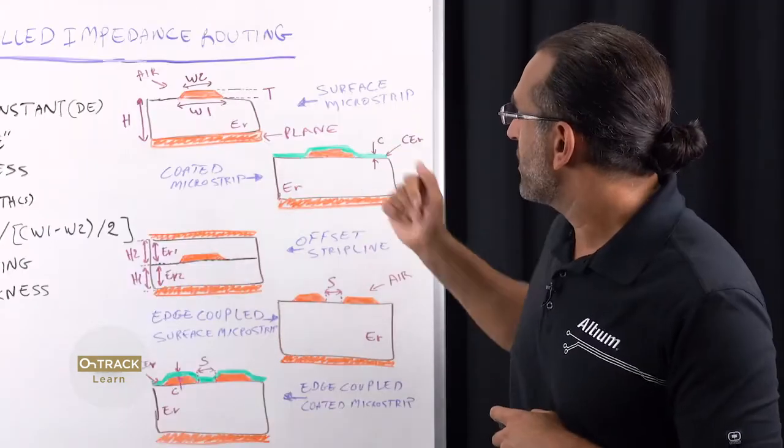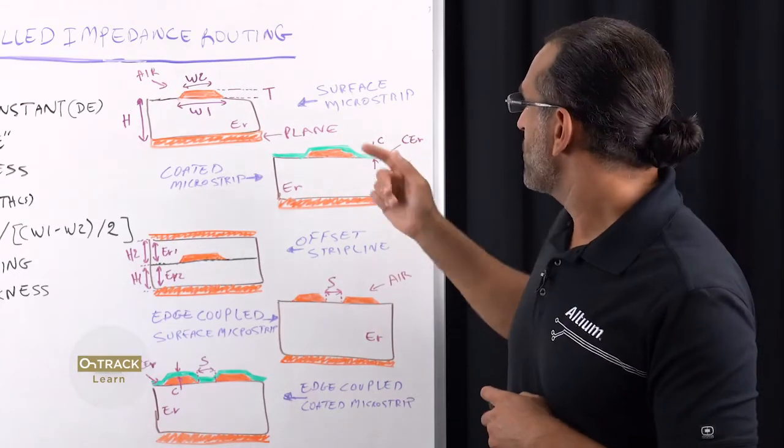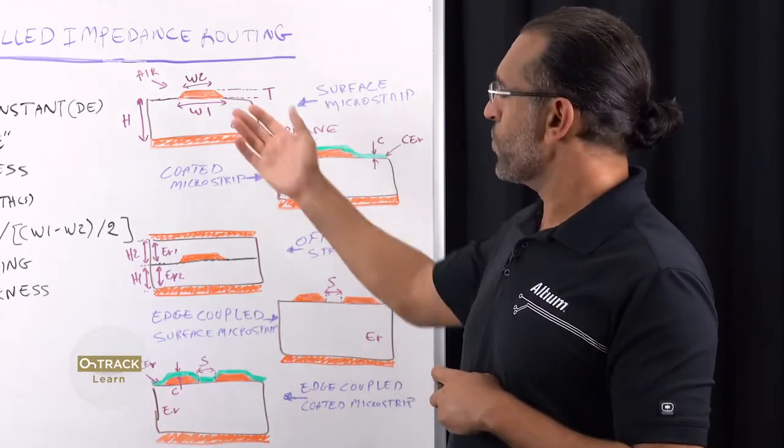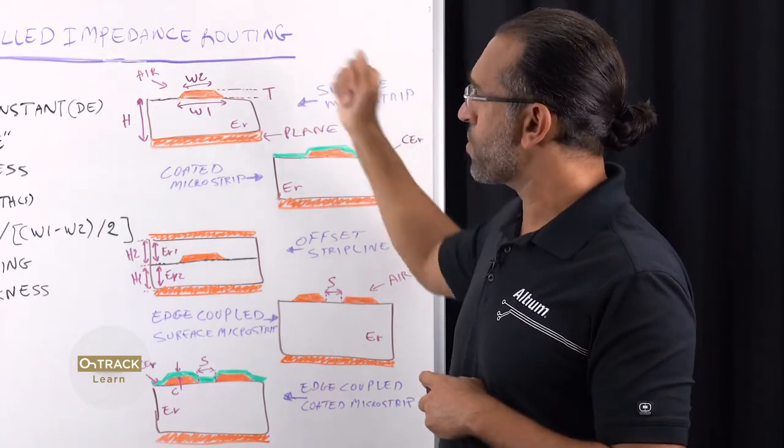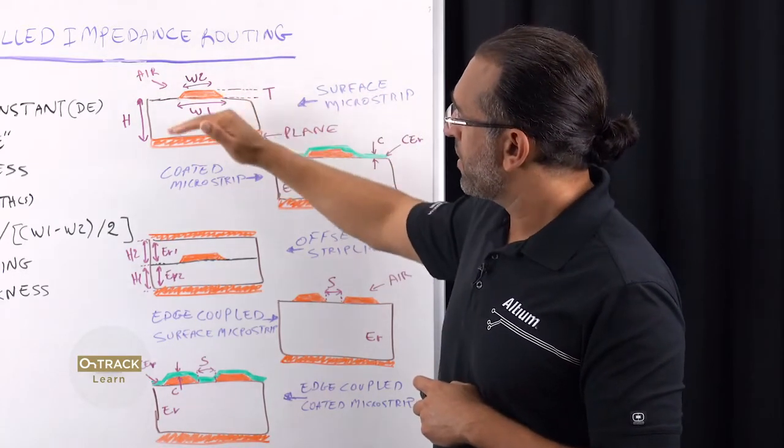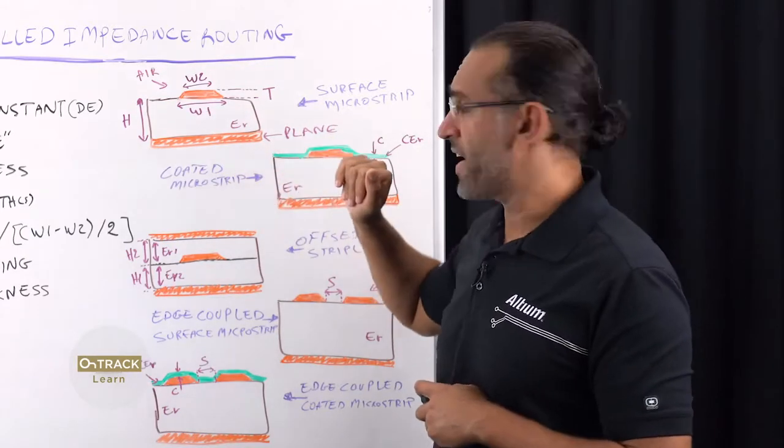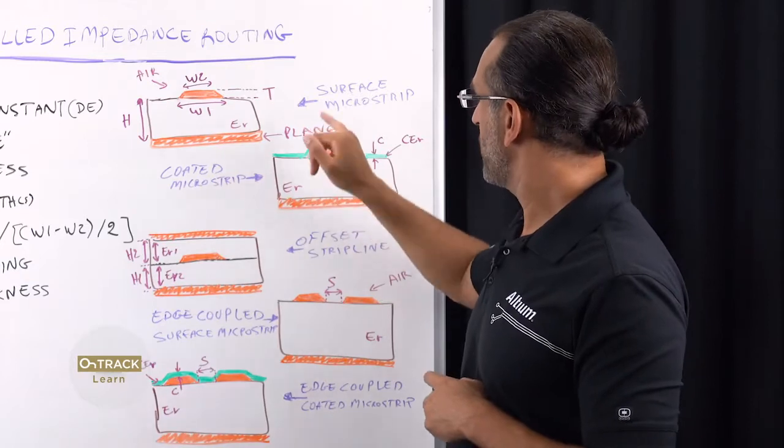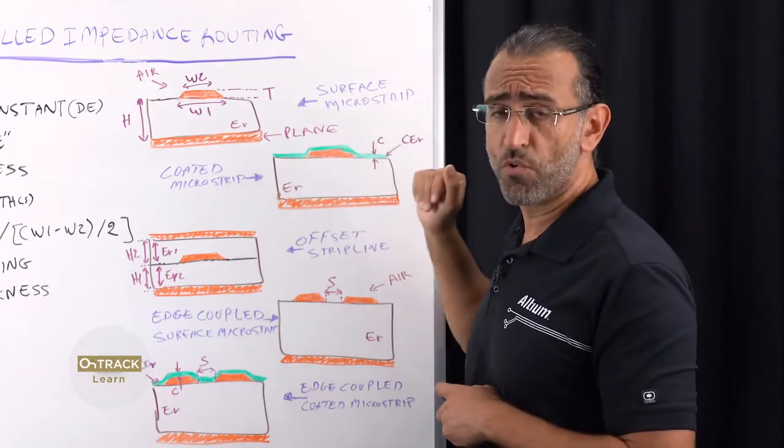So here are some of the typical configurations you'll find on most designs, and the first of which is a surface microstrip, which is a track on top or exposed to air with no coating and one dielectric constant material and a single plane from one side. And the coated microstrip, which is similar to the surface microstrip, except that you have a solder mask that you need to account for in your calculations.